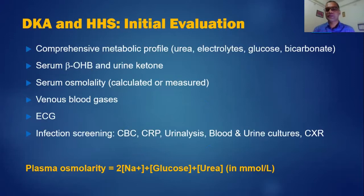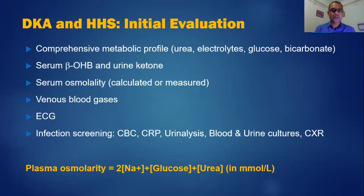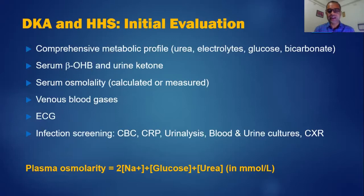Initial evaluation of both conditions includes a comprehensive metabolic profile covering plasma glucose, urea, electrolytes, bicarbonate, serum creatinine, and measurement of serum ketone bodies (beta-hydroxybutyrate) and urinary ketone bodies. Serum osmolality can be measured or calculated using the formula: 2 × sodium + glucose + urea (all in mmol/L), and should be more than 320 mOsm/L in HHS. Venous blood gas, ECG, complete blood count, CRP, urinalysis, and blood and urine cultures should also be performed. Note that DKA itself can cause mild neutrophilic leukocytosis, so results should be interpreted cautiously.